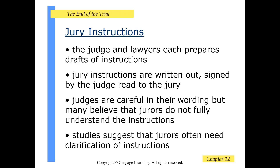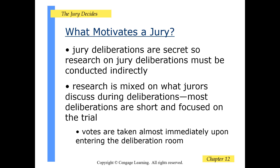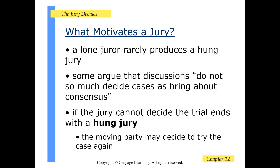Studies suggest that jurors often need clarification of instructions. Jury deliberations are secret, so research must be conducted indirectly. Research is mixed on what jurors discuss; most deliberations are short and focused on the trial. Votes are taken almost immediately upon entering the deliberation room. A lone juror rarely produces a hung jury, and some argue that discussions bring about consensus rather than decide cases. If the jury cannot decide, the trial ends with a hung jury, and the moving party may choose to retry the case.